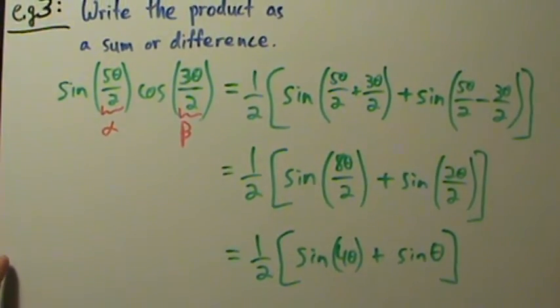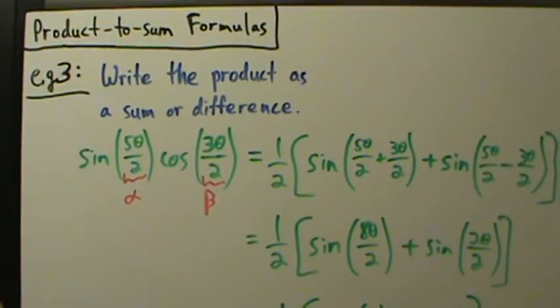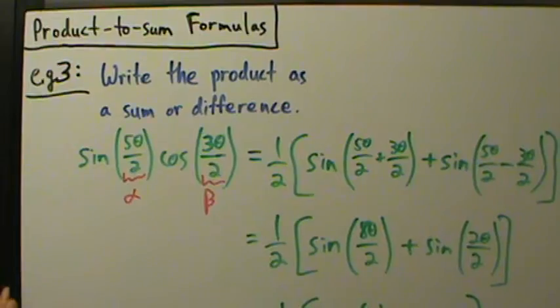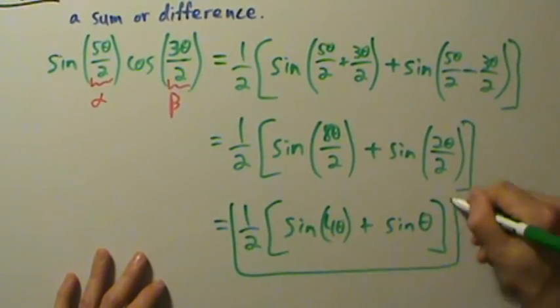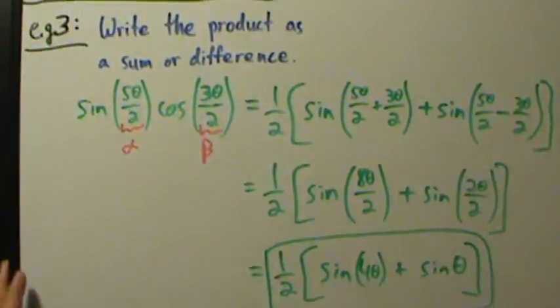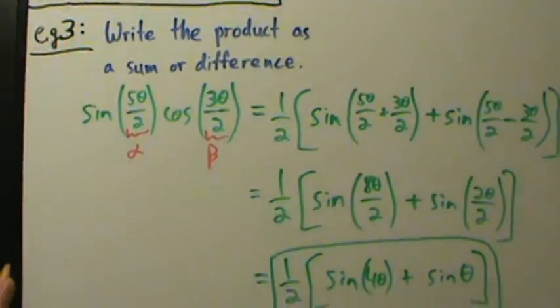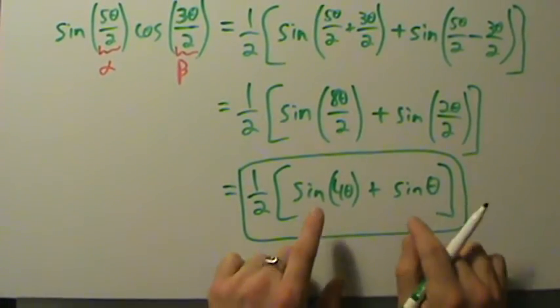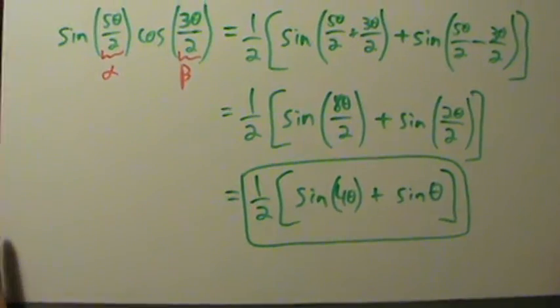So that's pretty much it for example 3 of using the product-to-sum formulas to write a product as a sum or a difference. And this is our answer here. So this product of a sine and a cosine function were rewritten as a sum of two different sine functions here. That's example 3.